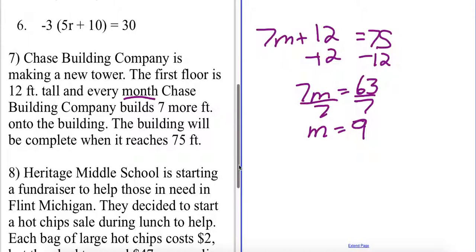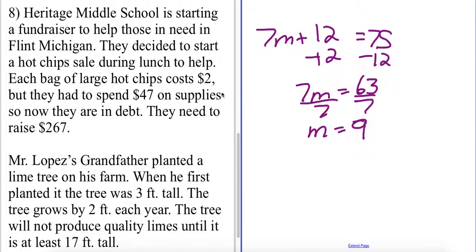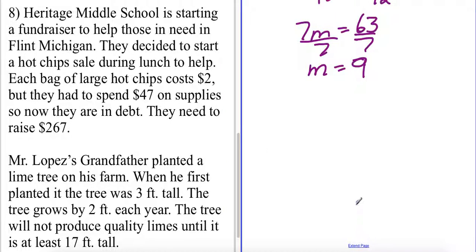In our next example Heritage Middle School is starting a fundraiser to help those in Flint. They decided to start selling hot chips. Each bag is $2 but they spent $47 in supplies. In order to reach their goal they have to raise $267.